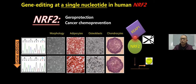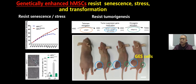Our first key target is NRF2, a transcriptional factor with geroprotective and tumor preventive effects. We edited a single nucleotide in the NRF2 gene, causing a change in amino acids and protein translocation from the cytosol to the nucleus, thereby increasing the biological activity of NRF2. We found that this single amino acid change makes cells resistant to replicative senescence, various toxic stimuli, and malignant transformation induced by oncogenes. We call these cells genetically enhanced stem cells. This genetically enhanced stem cell effectively promotes vascular regeneration and repair in a mouse hind limb ischemia model.